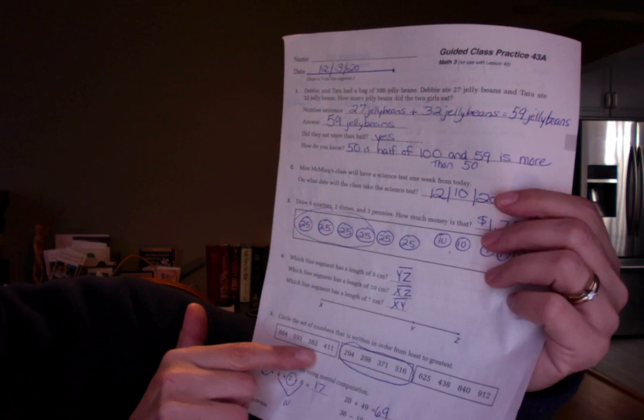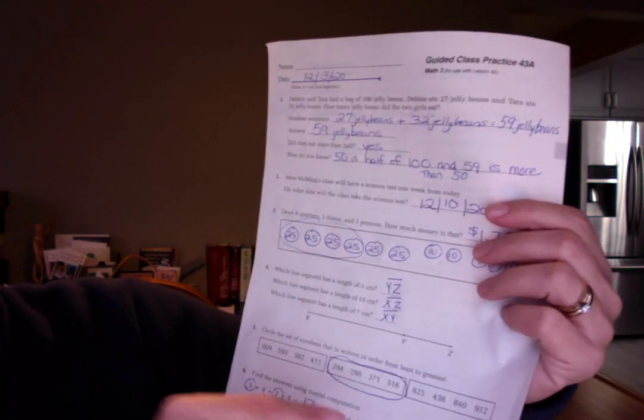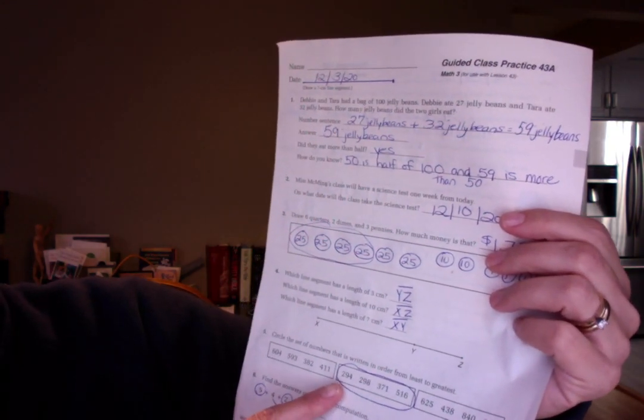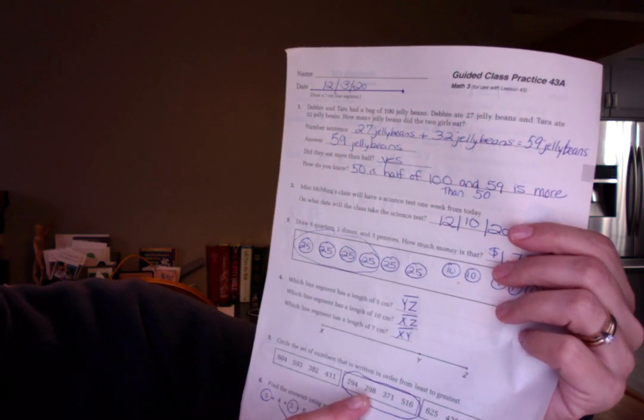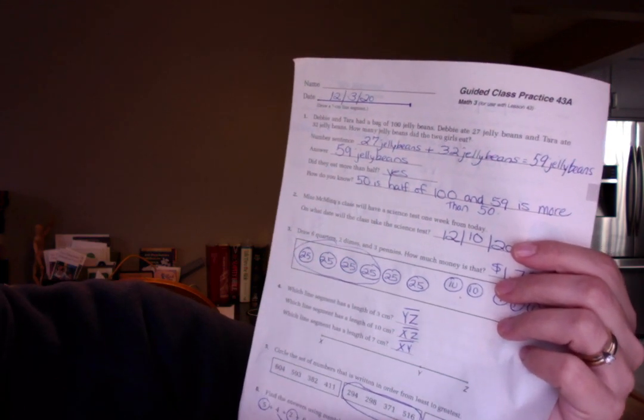Number five, circle the set of numbers that is written in order from least to greatest. You should have circled in the middle, 294, 298, 371, 516.